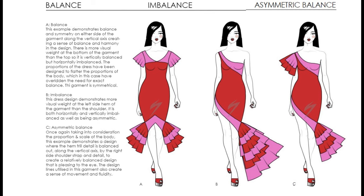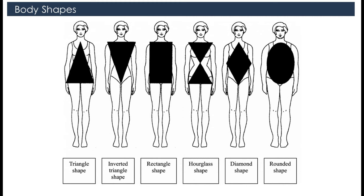For a fashion designer, understanding body shapes of human beings is very important. We can categorize body shapes into six categories: triangle shape, inverted triangle shape, rectangle shape, hourglass shape, diamond shape, and rounded shape.